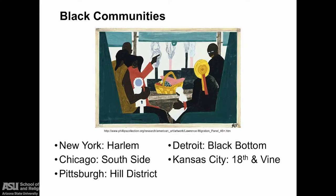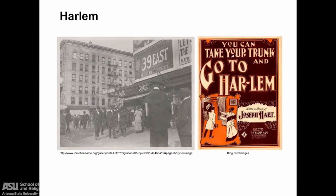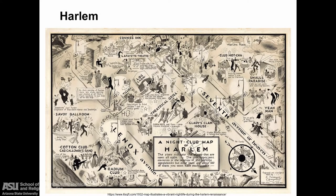Black communities formed based on these patterns of migration and were established in northern and western cities: in New York, it was Harlem; the South Side of Chicago; Pittsburgh's Hill District; the Black Bottom of Detroit; and the neighborhood of 18th Street and Vine in Kansas City. Prior to World War I, Harlem was already the largest colony of colored people in similar limits in the world. Located north of Central Park, centered between 130th and 145th Streets, the African American population in Harlem grew over 400% between 1910 and 1930, from 50,000 to 200,000.